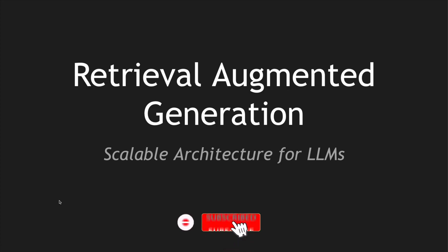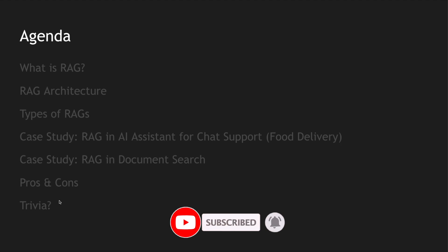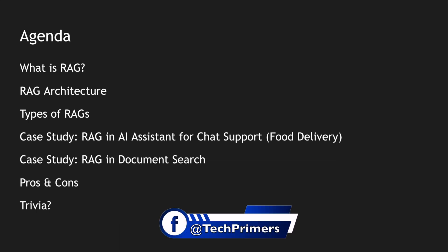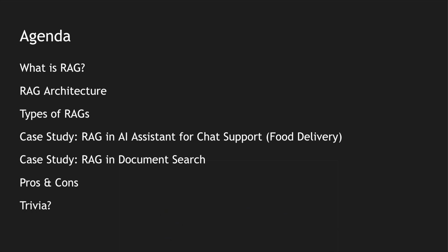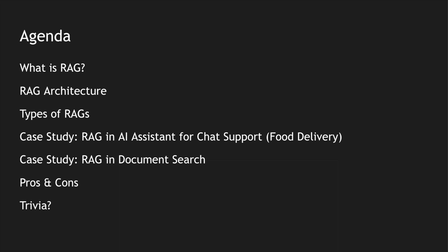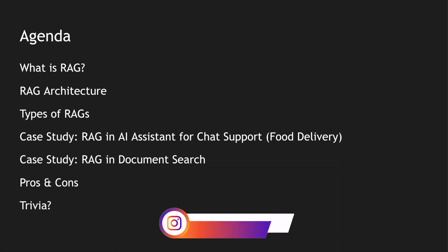Let's look at the agenda for this video. We are going to look at what is RAG, what the RAG architecture looks like, and what are the different types of RAG architectures. I'll explain these architectures with case study examples of a food delivery app using an AI assistant, and I'll also leverage a document search for a simple RAG use case. We will also discuss the pros and cons of the RAG architecture.